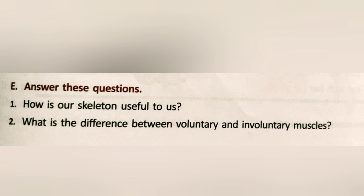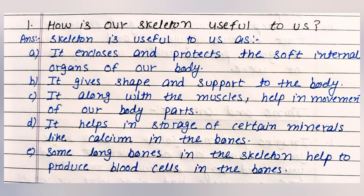Part E: Answer these questions. Question one: How is our skeleton useful to us? The skeleton is useful as: A, it encloses and protects the soft internal organs of our body; B, it gives shape and support to the body; C, along with the muscles, it helps in movement of our body parts; D, it helps in storage of certain minerals like calcium in the bones; E, some long bones help to produce blood cells.